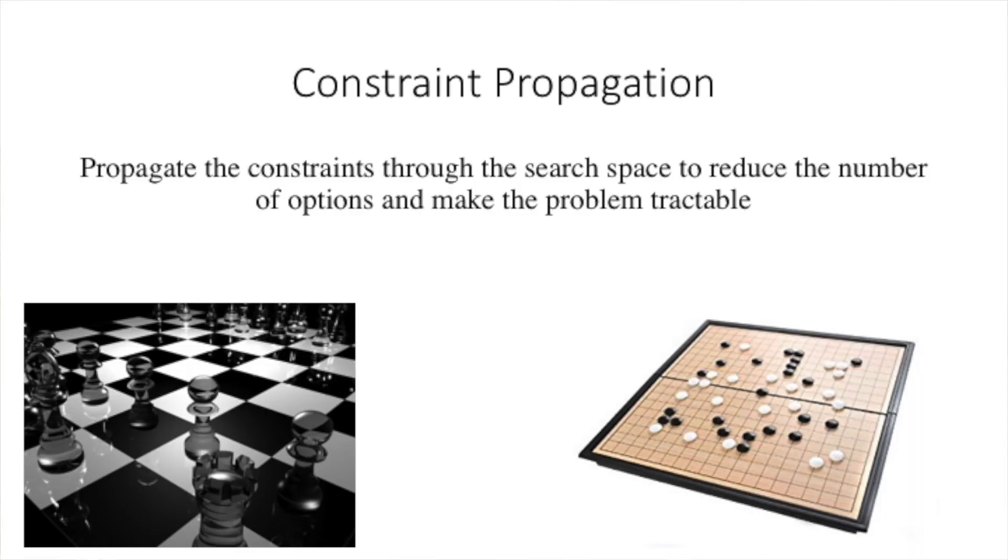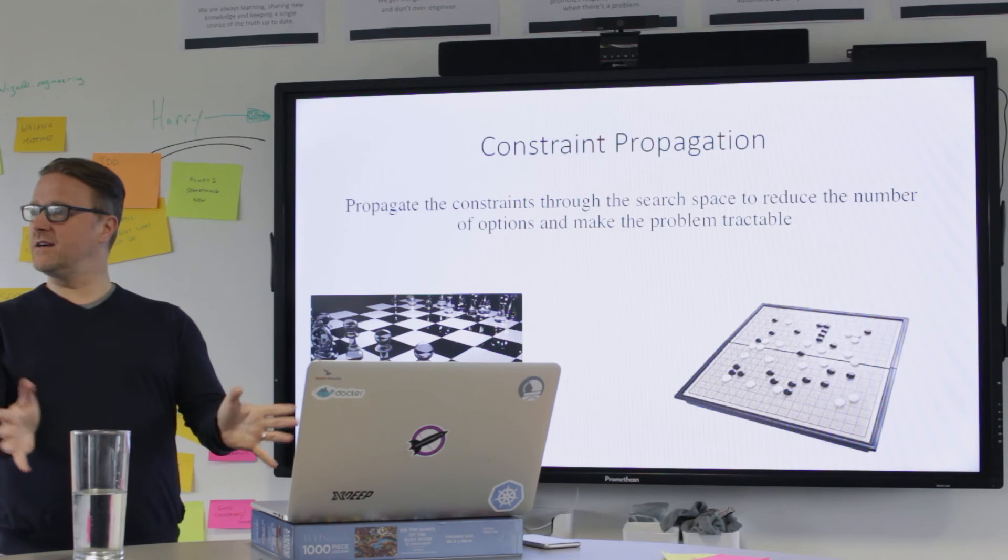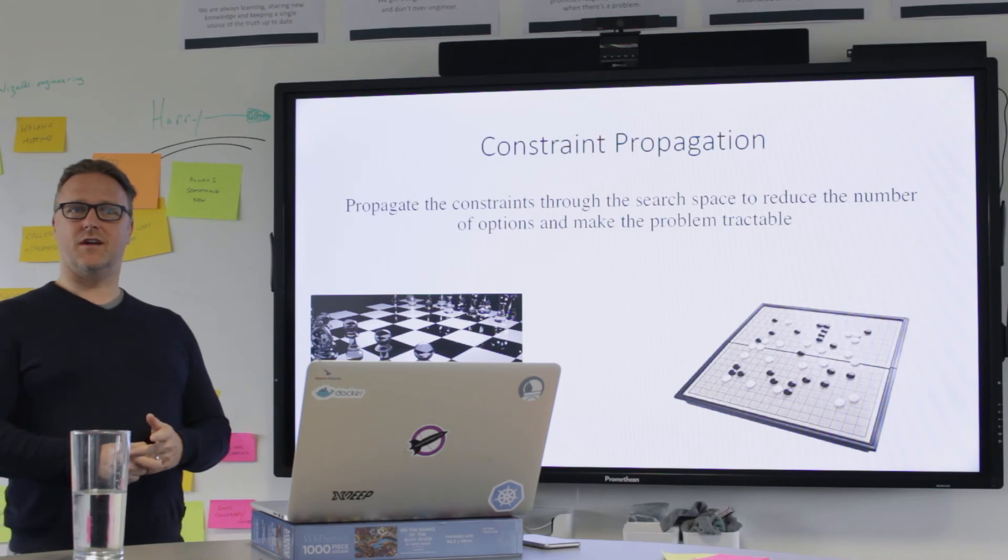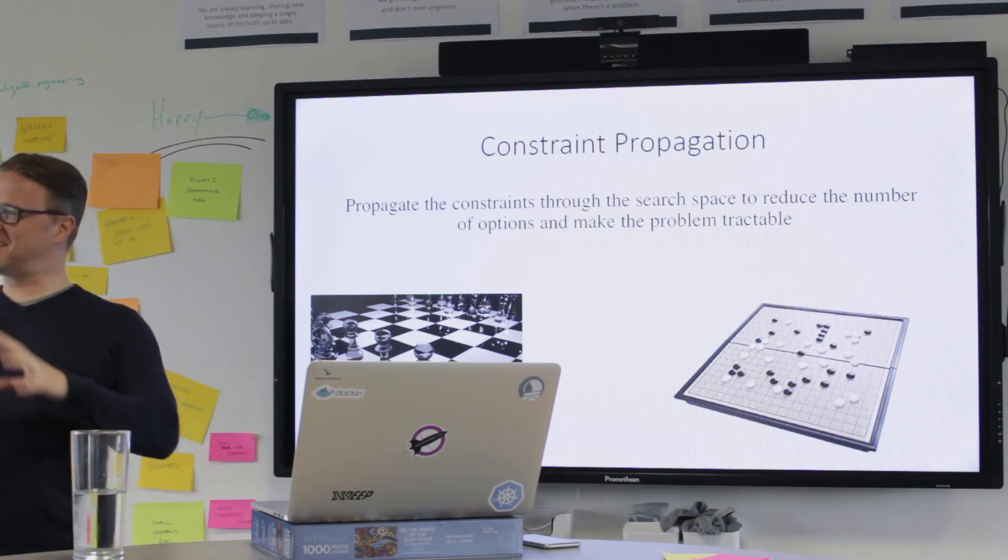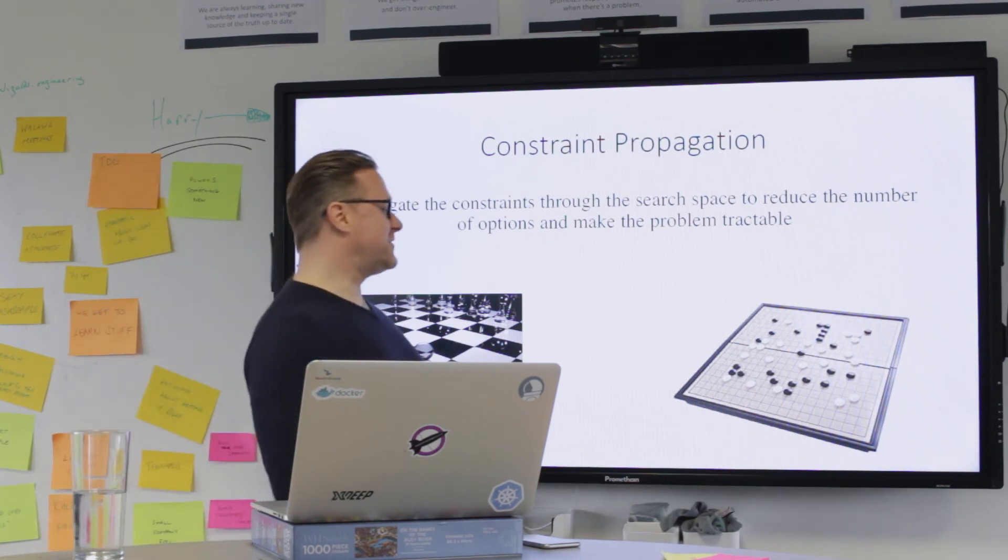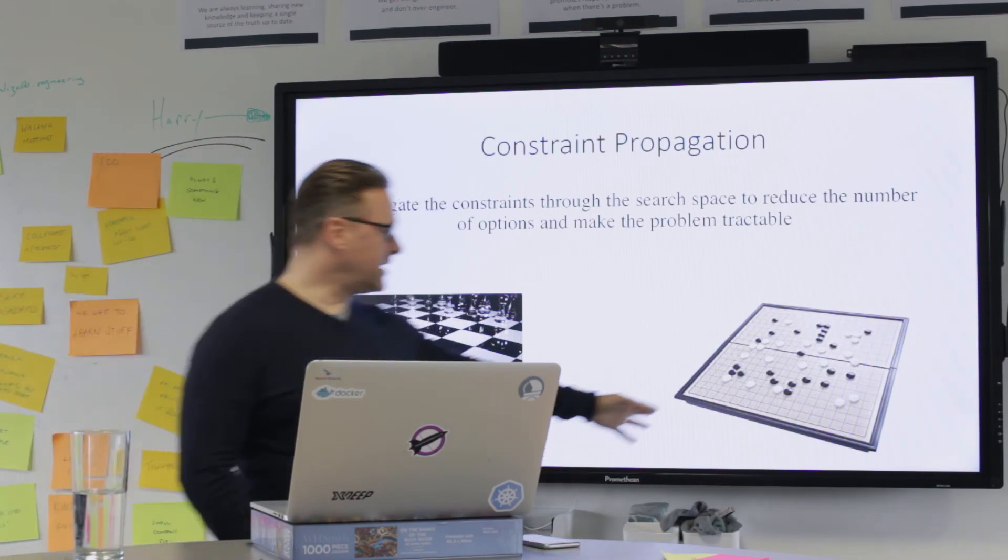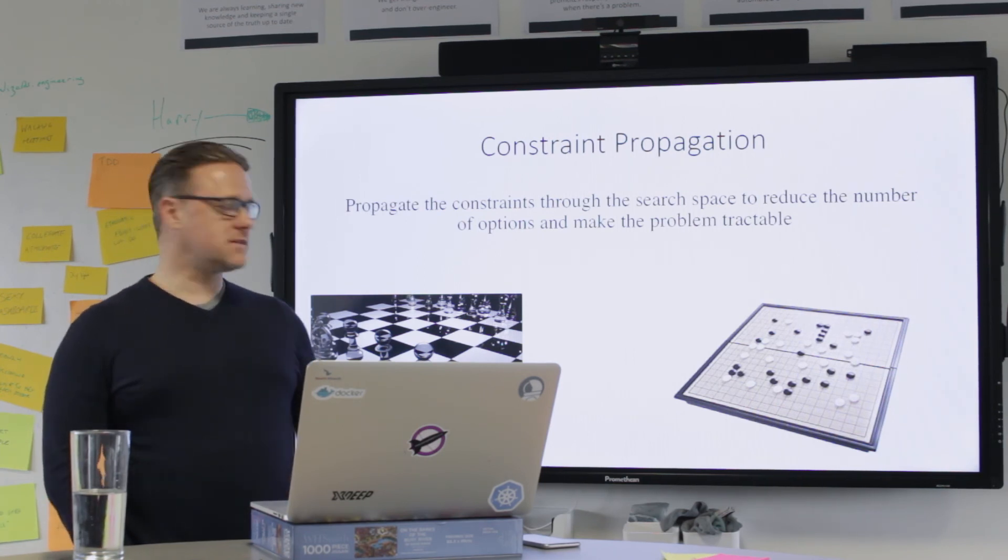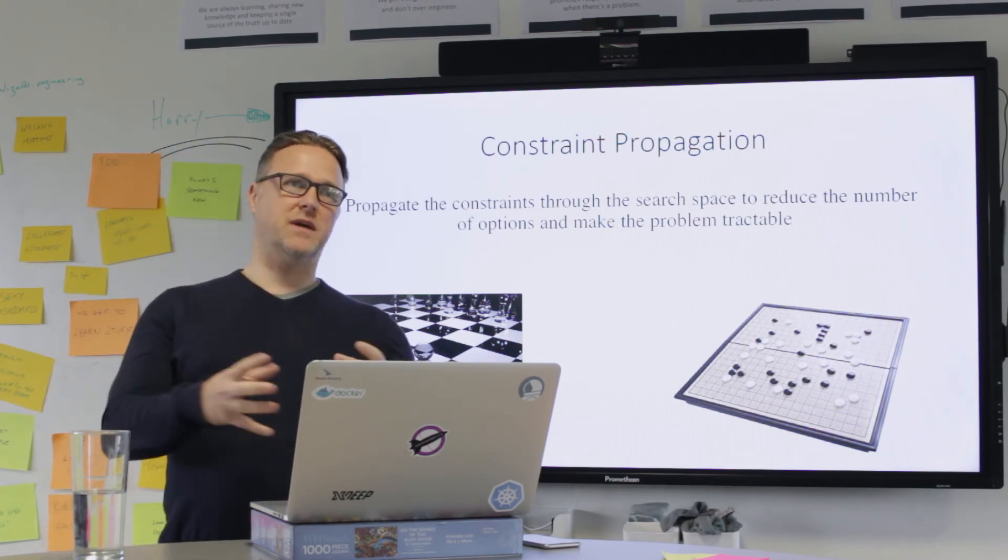But chess is far worse than Sudoku because every turn that you take has got a branching factor of maybe 50. And then on average, there are about 100 turns in chess games. So you can imagine that's different possible permutations, which is large. And then Go is even worse, Go is just chronic. Because look how many squares there are and look at how few constraints there are in that game. So constraint propagation is used a lot in AI to make the search space smaller so that when you actually run the search algorithm, there are far fewer things to choose between.